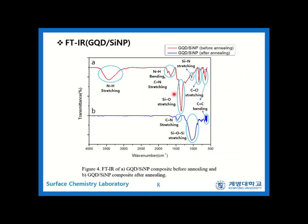Figure 4 shows a comparison of FTIR spectra of the GQD silicon composite before and after annealing. We could observe that peaks caused by NH bonds, CN bonds, and CC bonds in the composite before annealing disappeared in the composite after annealing.